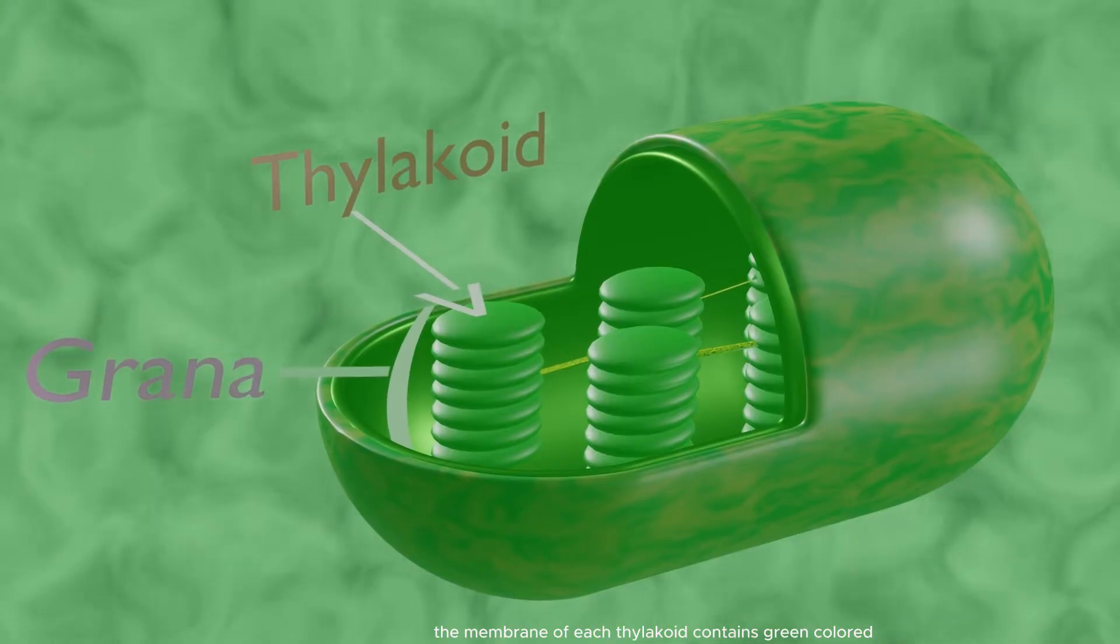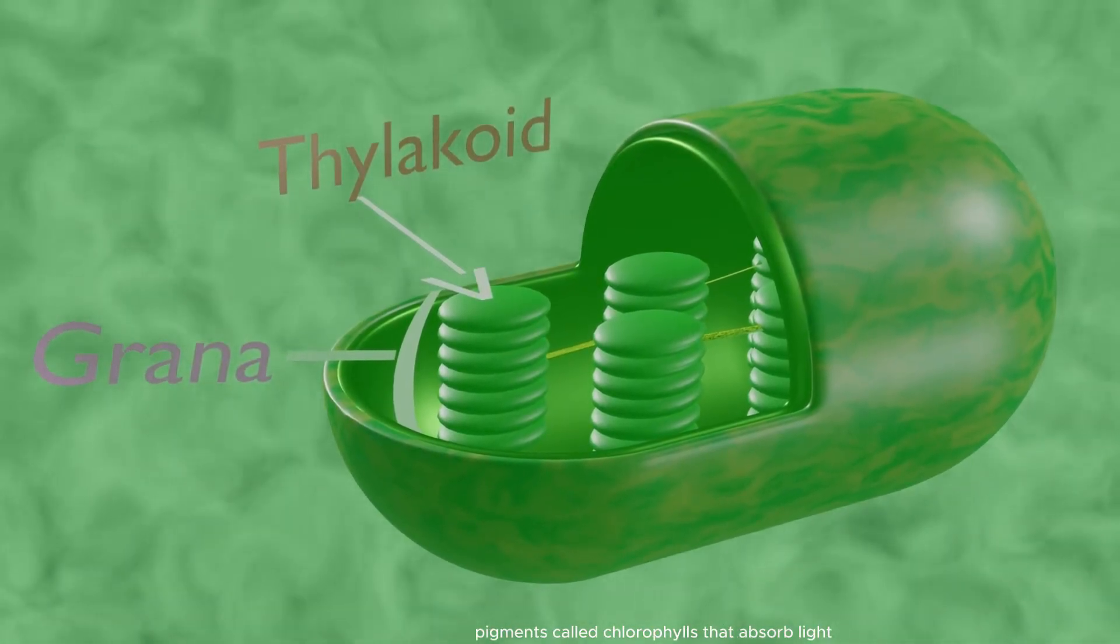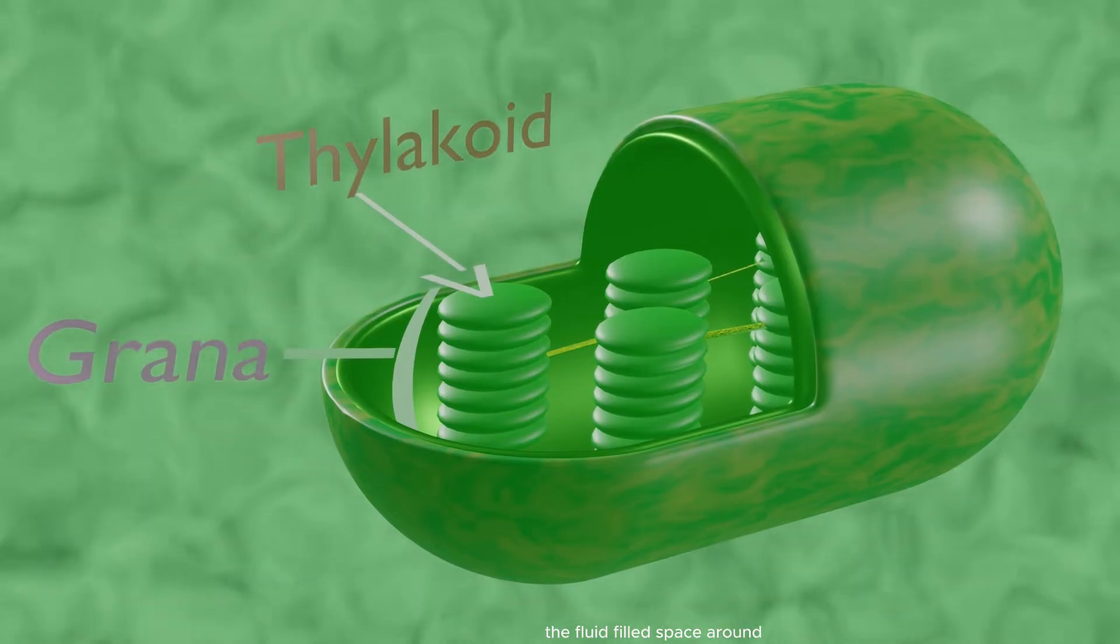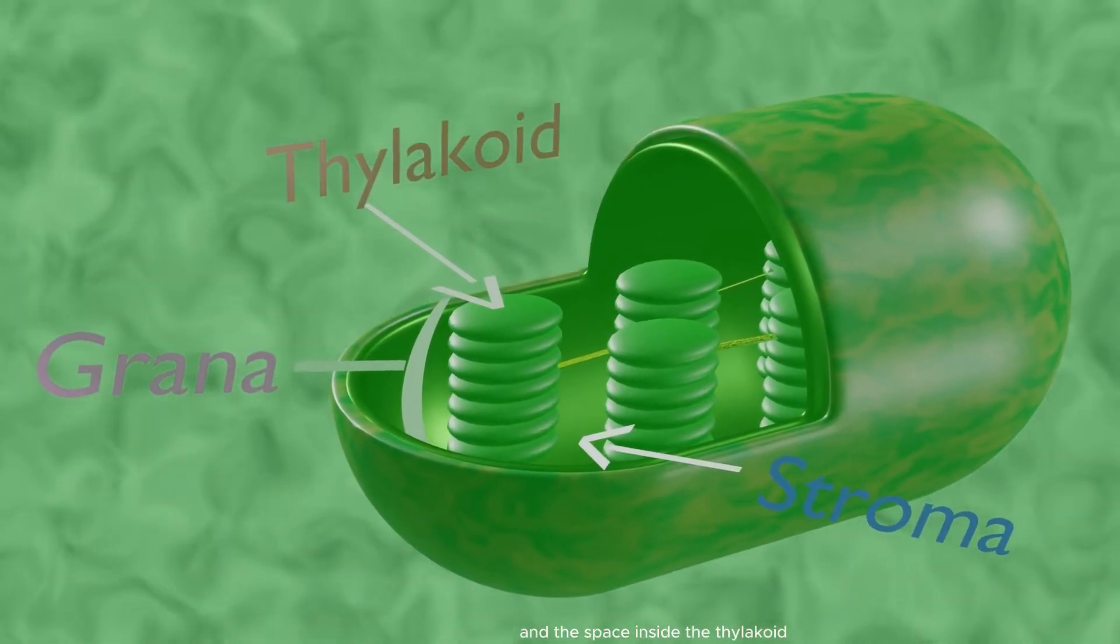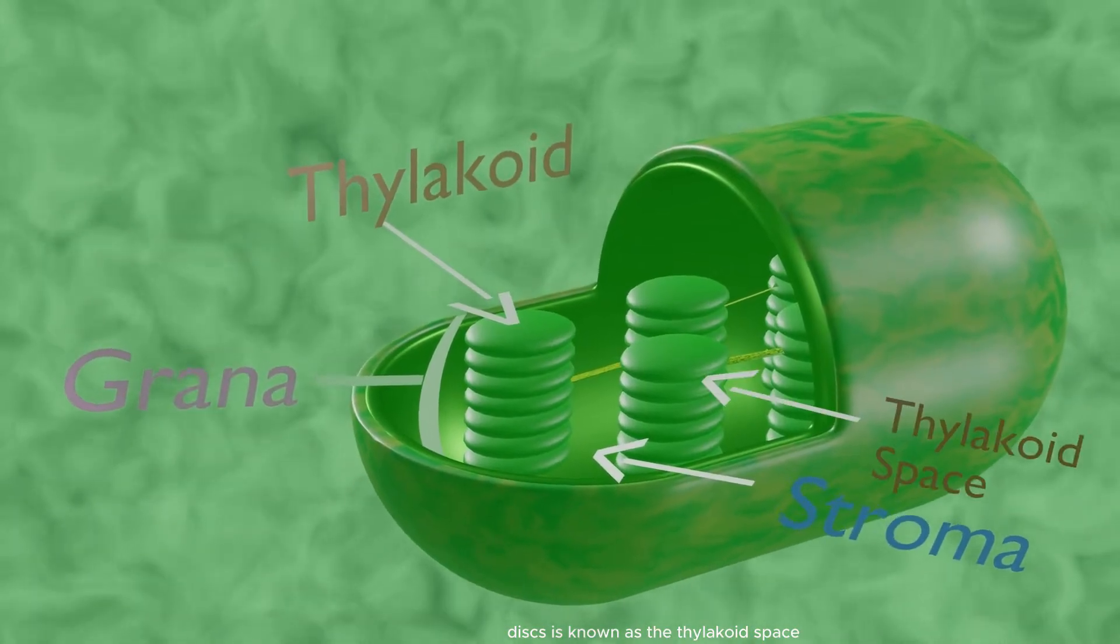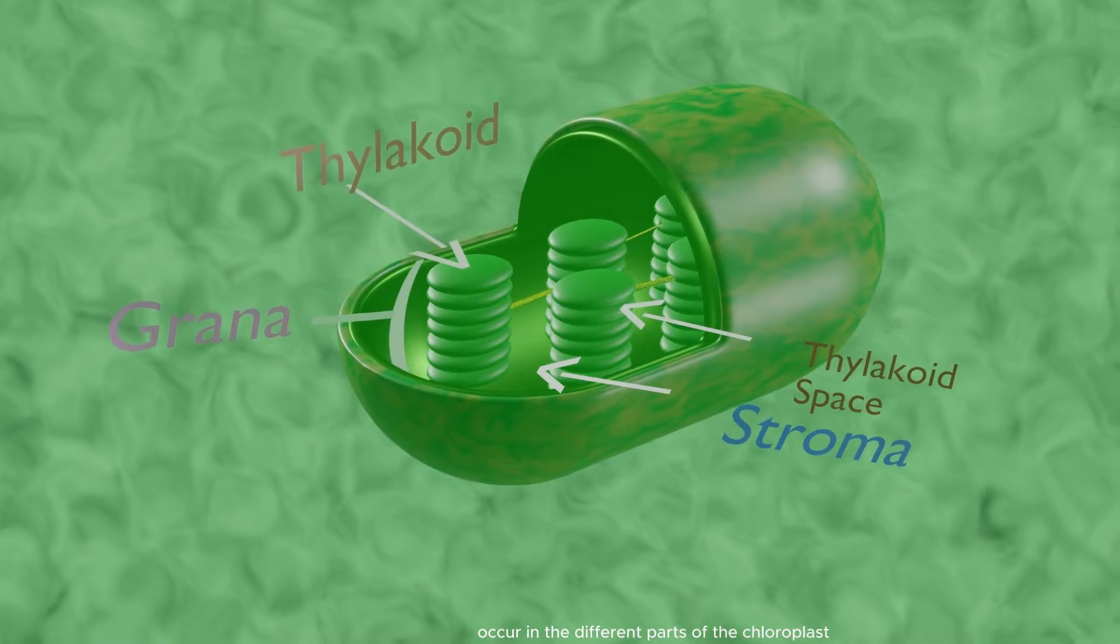The membrane of each thylakoid contains green-colored pigments called chlorophylls that absorb light. The fluid-filled space around the grana is called the stroma, and the space inside the thylakoid discs is known as the thylakoid space. Different chemical reactions occur in the different parts of the chloroplast.